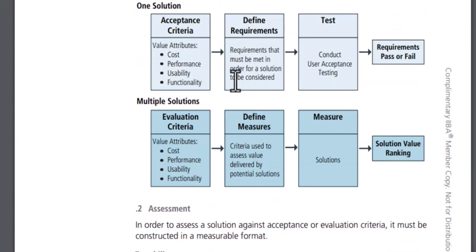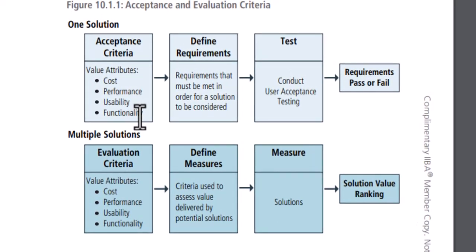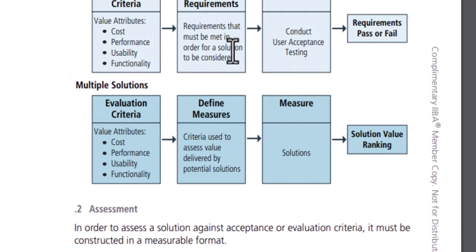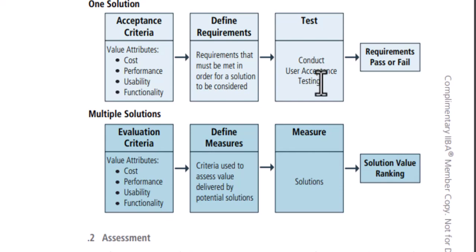When gathering requirements from business owners, factors like cost, performance, usability, and functionality are all important. You need to define acceptance criteria considering how much it will cost to develop, how well the application will perform, and how user-friendly it can be. When you have multiple solutions, you define different types of functionalities and test accordingly. Based on acceptance criteria you define the requirements and conduct user testing, evaluating pass or fail results.